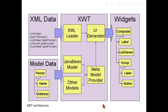XWT takes declarative UI as input along with the application model that will be bound to the widgets. At runtime, XWT includes a simple model for classes that conform to Java Bean conventions of simple data accesses and setter methods. Additional models can also be defined and contributed to XWT.